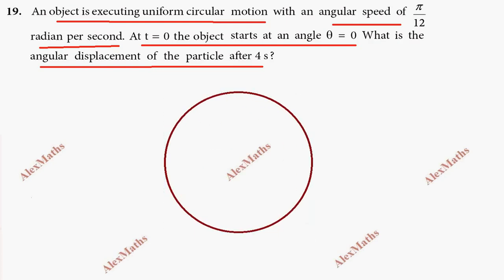So I'm going to draw the center, and a particle on the circle. At t equals zero, the initial position is at theta equals zero. After four seconds, we need to find the angular displacement from this starting point.